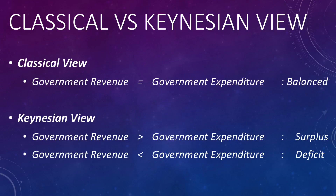It is important to distinguish the role of government under the classical framework and the Keynesian framework. Under the classical view, government revenue should be equal to government expenditure in a specific period — we call this the balanced budget. But in the Keynesian view, it is necessary to tweak government revenue and expenditure. If government revenue is greater than expenditure, we have a surplus; if revenue is less than expenditure, we have a deficit. Under the classical view, the role of government is to be passive, but under the Keynesian view, it is the duty of the government to intervene when the economy is not functioning well.